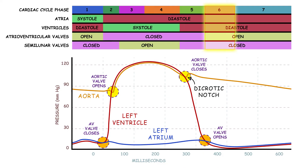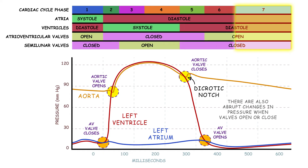This results in a swift decrease in atrial pressure. During the 7th phase, reduced ventricular filling, aortic pressure continues to fall. Note that there are also abrupt changes in pressure when valves open or close, allowing blood to flow or preventing backflow, respectively.